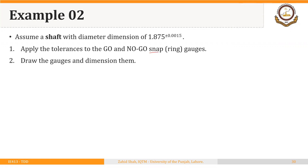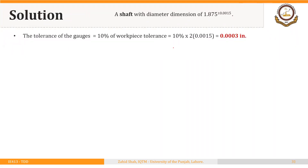We will be calculating the sizes of go and no-go snap gauges, but the same calculations would apply if we were solving for the ring gauges. The tolerance of the gauges is equal to 10% of the workpiece tolerance, so that will be 10% of 2 times 0.0015, because we have equal bilateral tolerance of 0.0015. That turns out to be 0.003 inch.